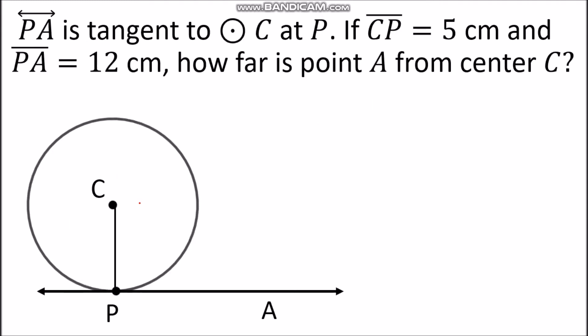Let's try to answer a question about Theorem 101. Line PA is tangent to circle C at point B. If segment CP is 5 cm and segment PA is 12 cm, how far is point A from center C? So what we're looking for is the distance from point A to center C, which is line segment CA. Given: CP = 5 cm and PA = 12 cm.